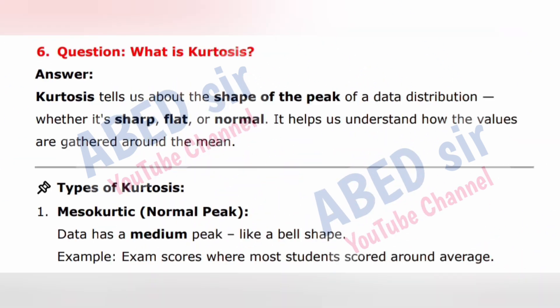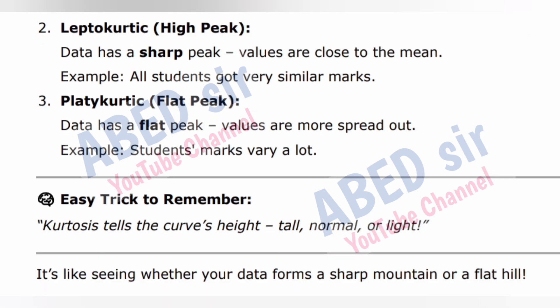Next important short question: What is kurtosis? Answer: Kurtosis tells us about the shape of the peak of a data distribution — whether it's sharp, flat, or normal. It helps us understand how the values are gathered around the mean. Types of kurtosis: 1. Mesokurtic (normal peak) — data has a medium peak like a bell shape. Example: exam scores where most students scored around average. 2. Leptokurtic (high peak) — data has a sharp peak; values are close to the mean.